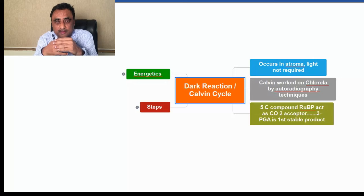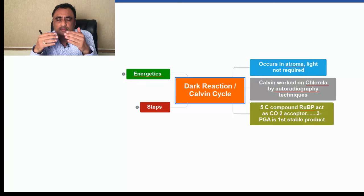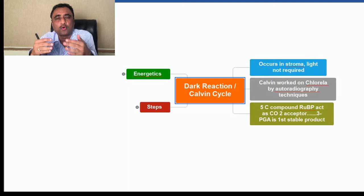The cycle was worked out by scientist Calvin, which is why it is called the Calvin cycle. The site of occurrence for the dark reaction is the stroma, the ground substance of chloroplasts, where all the enzymes concerning the Calvin cycle are present.